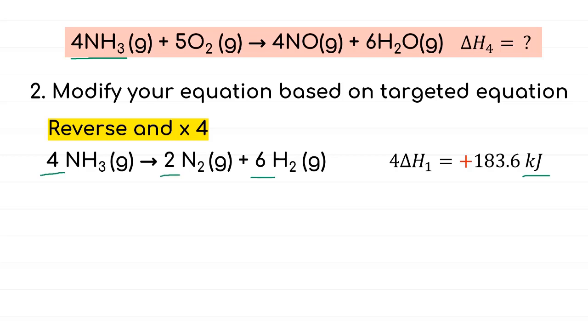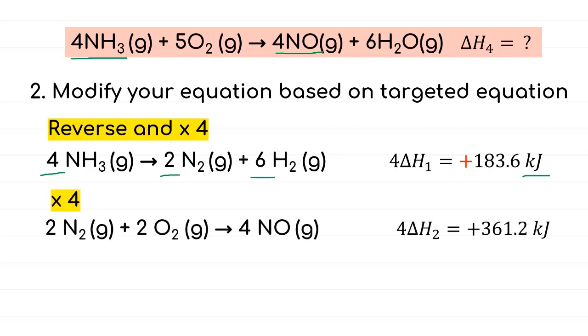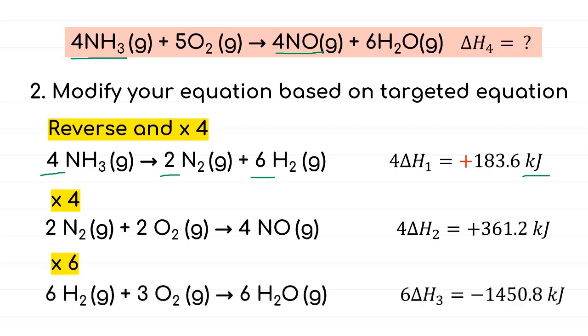Next is O2. If we check our given equations, we can see O2 is present twice. So, we'll leave it for now and proceed to NO. On targeted equations, we have 4NO on the right-hand side. Side where NO is located is the same as in targeted equations apart from its coefficients. So, we just need to times the whole equations with 4, giving these whole equations and delta H of positive 361.2 kilojoules. Then, we have water. Same case as NO where we just need to multiply the whole reaction with 6 to get 6H2O. Delta H has now become negative 1450.8 kilojoules.